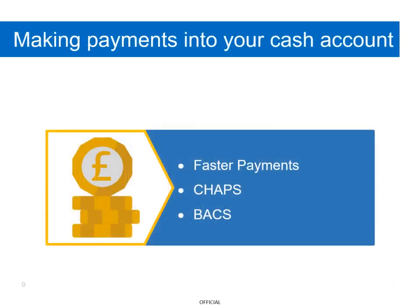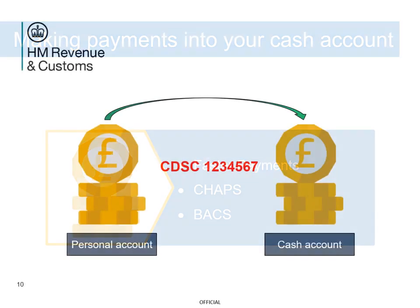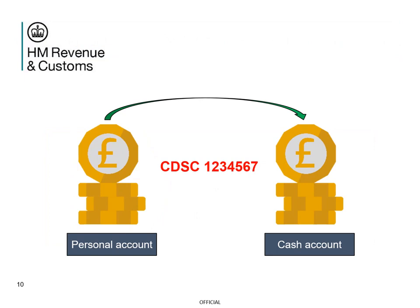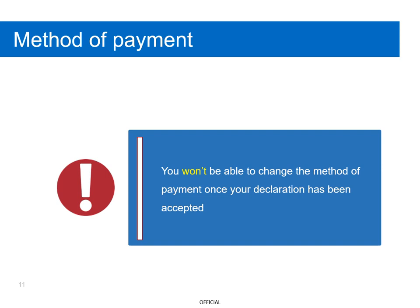To make payments into your Cash Account, you simply transfer from your bank account to the new Customs Declaration Service bank account, using one of the following: Faster Payments, CHAPS — that's the Clearing House Automated Payment System — or BACS, Bankers Automated Clearing System. When transferring funds, you'll need to use the reference CDSC followed by your Cash Account number. On the Customs Declaration Service, you have the ability to amend the declaration during the 10 minute dwell time after the declaration has been submitted.